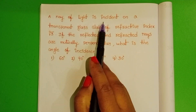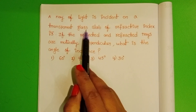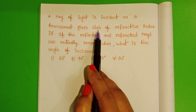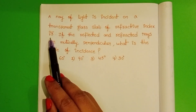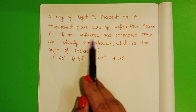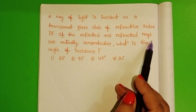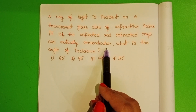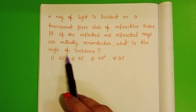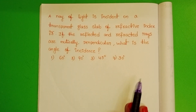A ray of light is incident on a transparent glass slab. The refractive index is √3. If the reflected and refracted rays are mutually perpendicular, what is the angle of incidence?